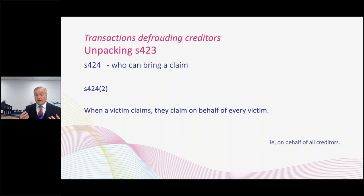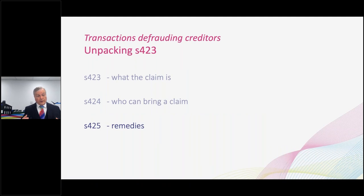It's important to remember that a Section 423 claim, particularly when brought by a victim, is a collective claim. So if the victim manages to get the transaction set aside, they're not entitled to seize the value of the property that's come back for themselves. That property has to be made available for everybody who has been prejudiced by the transaction. That happens automatically by virtue of the pari passu rule if there's a formal insolvency, but otherwise it's something the court will have to take into account when giving the order for the remedy.